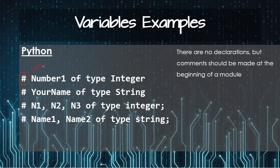Hash sign is for the comments, meaning that this is not an instruction. This is used whenever you are writing a program. Before every line, you should write a comment to help yourself or to help the others who are reading your program to understand what you are doing and why you are doing this. Number one of type integer, your name of type string, N1, N2, N3 of type integer - all of these are the comments. Comments should be made at the beginning of a program or a module.